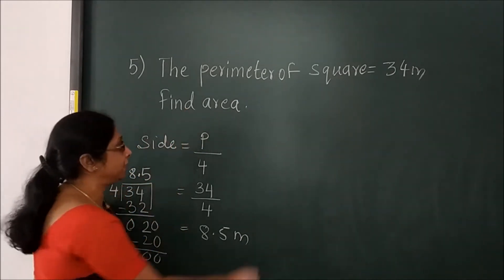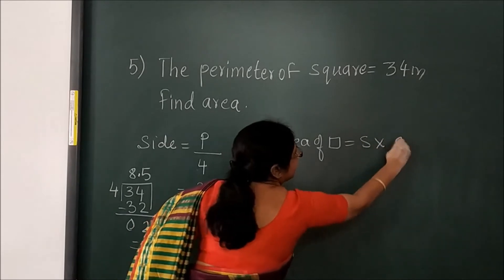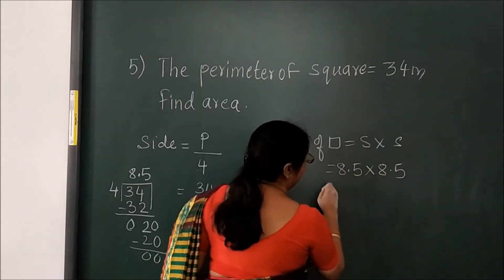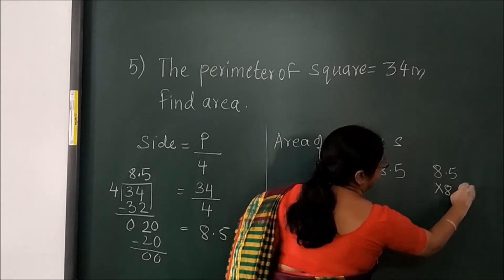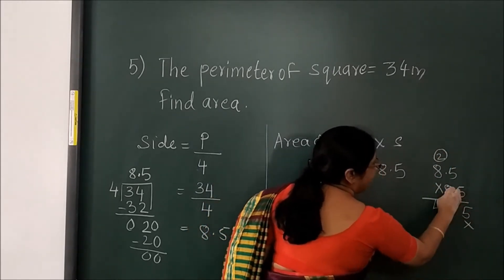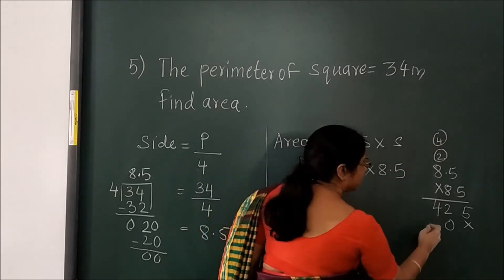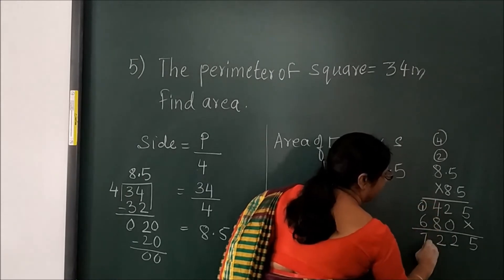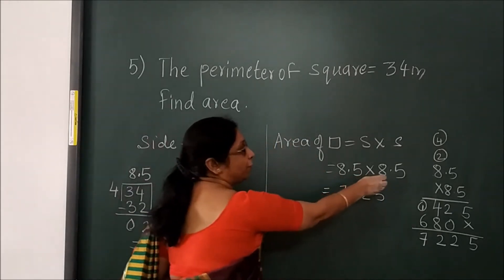After finding the side, you will find the area of the square. Area of square equals side into side, and here the side is 8.5. So 8.5 into 8.5. Carry out the multiplication: 5 fives are 25, 5 eights are 40, 8 fives are 40, 8 eights are 64 plus 4. After addition: 7225. There is 1 decimal digit and 1 decimal digit, so total 2 decimal places — giving 72.25. Here 1 meter times 1 meter equals meter squared.